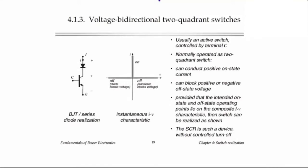Let's continue our discussion of switch applications to talk about voltage bidirectional two-quadrant switches and four-quadrant switches. Another possible function a switch must perform is its ability to block both polarities of voltage when the switch is turned off. This is the voltage bidirectional function for a switch.